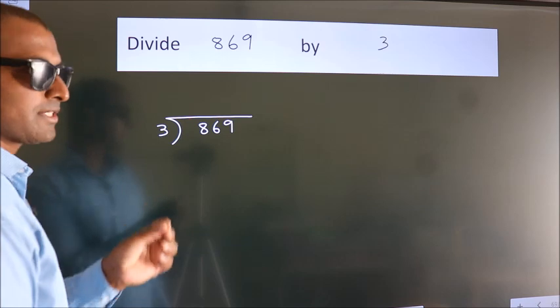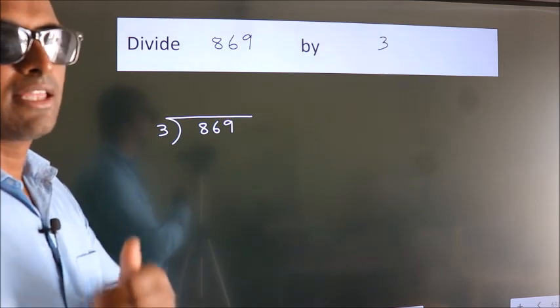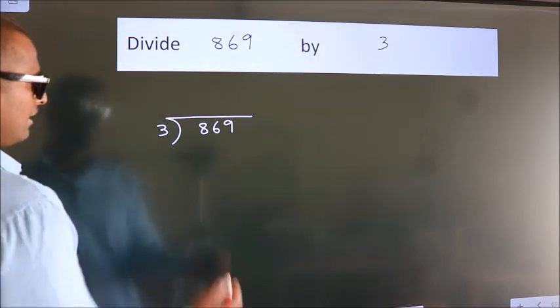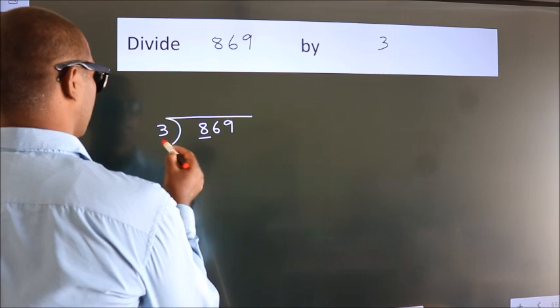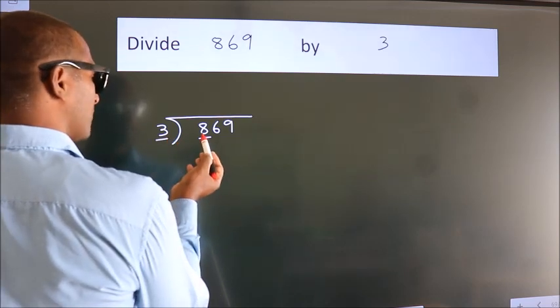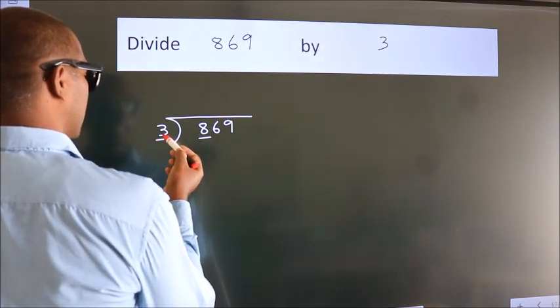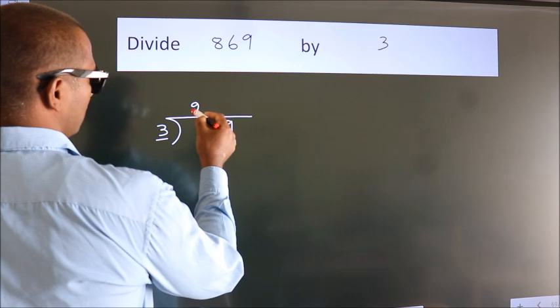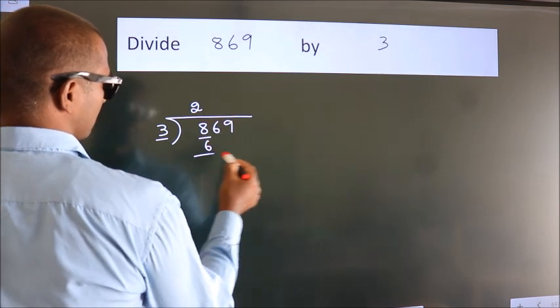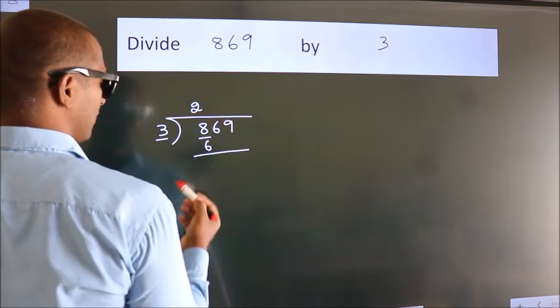This is your step 1. Next, here we have 8, here 3. A number close to 8 in 3 table is 3 2s, 6. Now we should subtract.